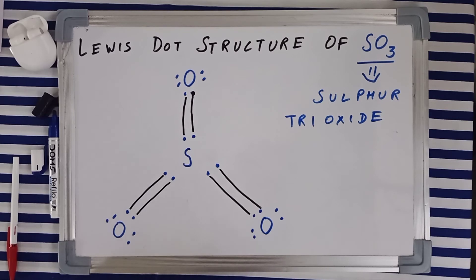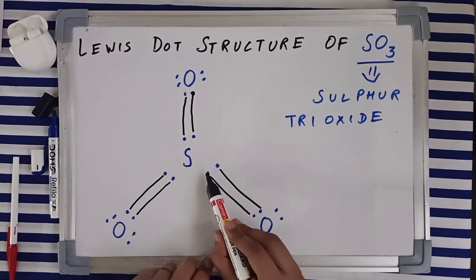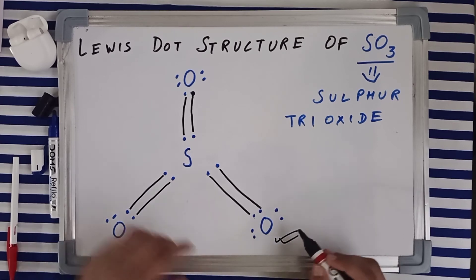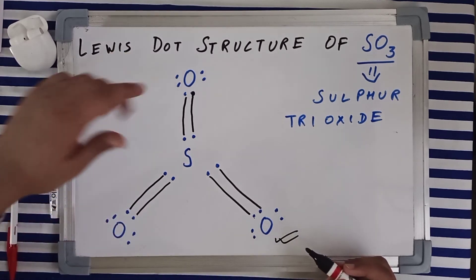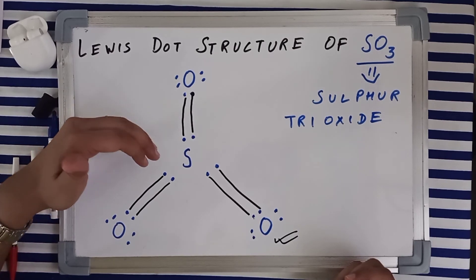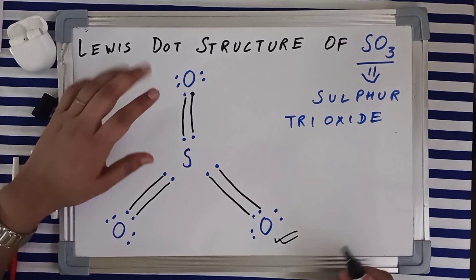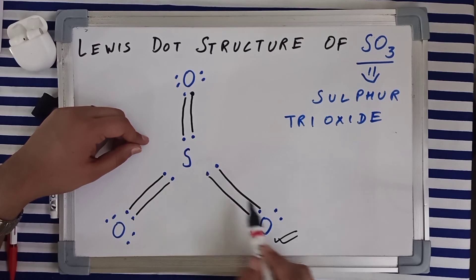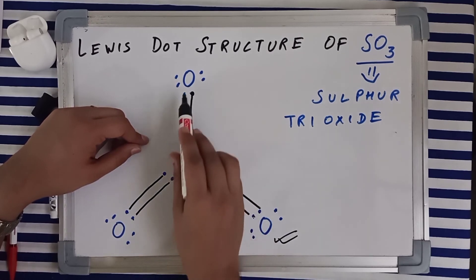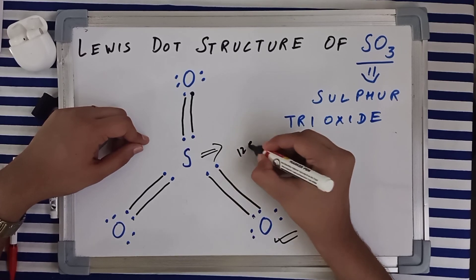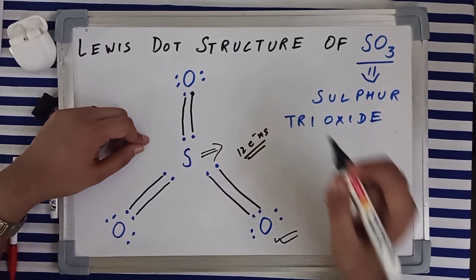All of the oxygens are going to complete their octets. Let's count the number of electrons: one, two, three, four, five, six, seven, eight. Similarly, these two oxygens have also completed their octets. But while talking about sulfur, it has obviously exceeded the limit of eight electrons in its valence shell. If you want to count, let's count: one, two, three, four, five, six, seven, eight, nine, ten, eleven, twelve. So sulfur has twelve electrons after bond formation in its valence shell.